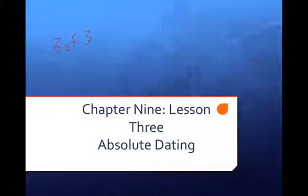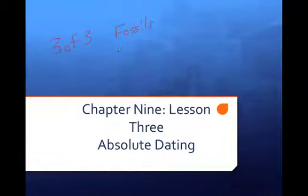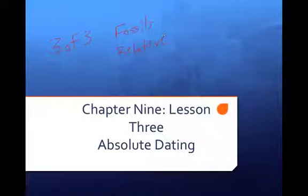So far in this unit, Lesson 1, we talked about fossils. Lesson 2 was relative dating, and if you'll remember, relative dating is when we figure out the age of something compared to something else. You always have to have at least two things in order to compare them. You would say layer A is older than layer B. Today we're talking about absolute dating, which is a little bit different.